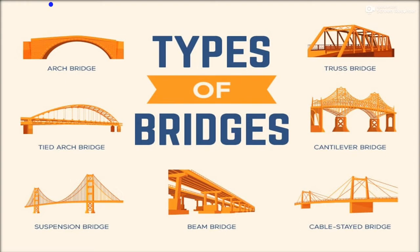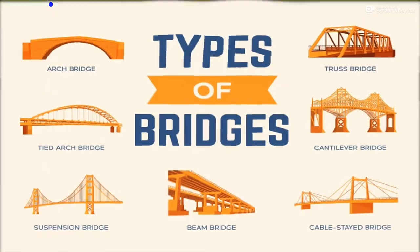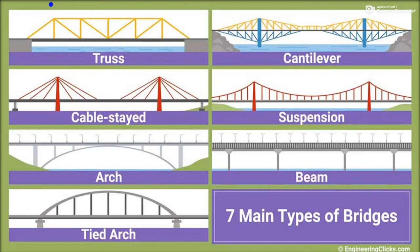You can see an arc bridge has an arc shape. A tied arc bridge has arcs which are tied. A suspension bridge is suspended. A truss bridge has different cross-like shapes. A cantilever bridge has cantilever structures. A cable-stayed bridge uses cables, and a beam bridge uses beams. These bridges are named as per the structure or materials used to make them.